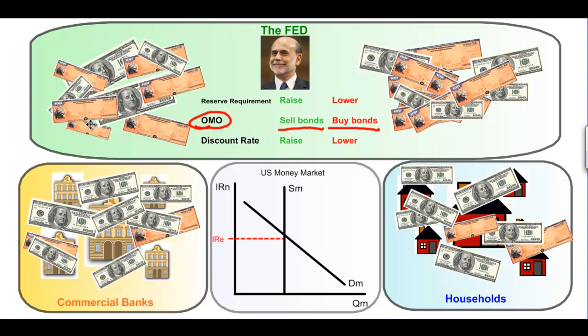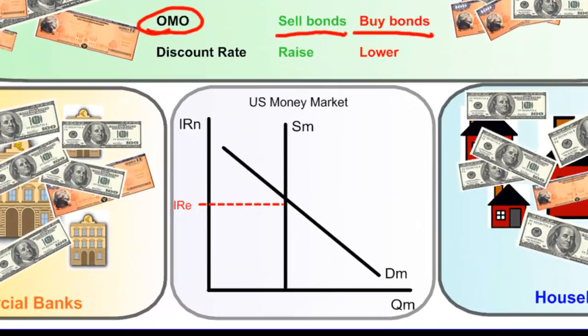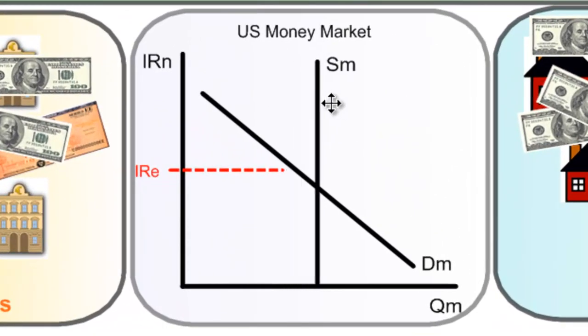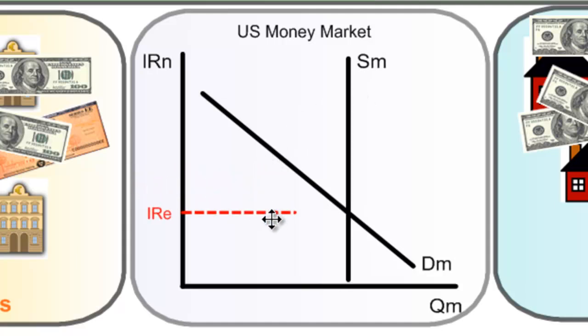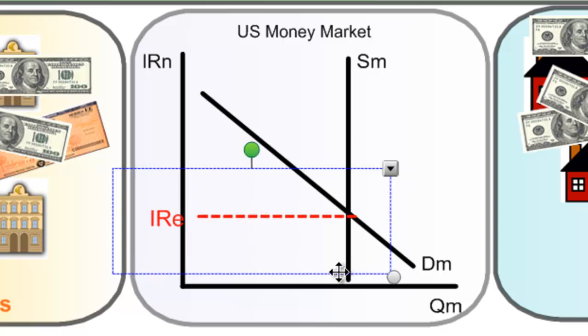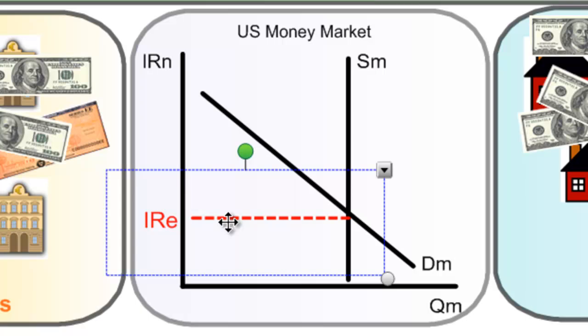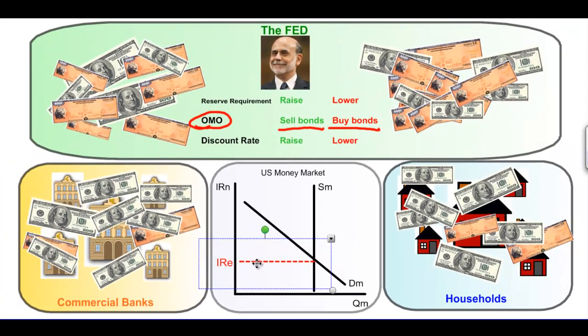An increase in bond purchases by the Federal Reserve leads to an increase in the supply of liquid money — our money supply curve shifts out — and since there's more liquidity in the system, the equilibrium interest rate falls and borrowing costs decrease. As the Fed buys bonds from commercial banks and households, it takes an illiquid asset out of circulation and injects money into the economy. Money held at the Fed is not part of the money supply since it can't be borrowed or spent. However, as soon as money is injected into the commercial banking system and into the hands of households, there is more money to be spent, leading to economic stimulus.